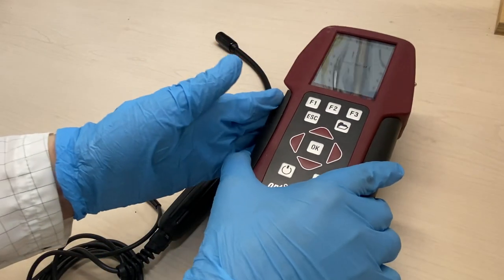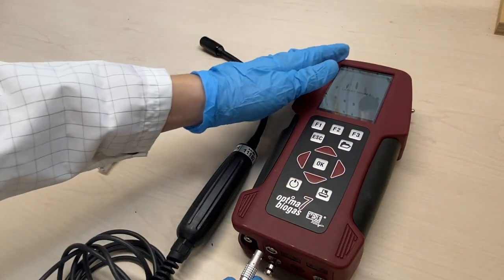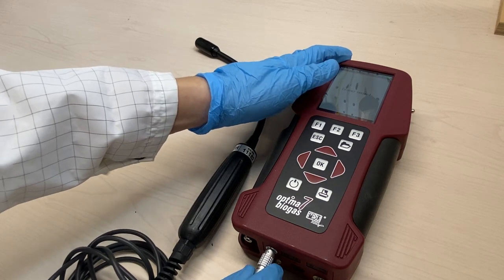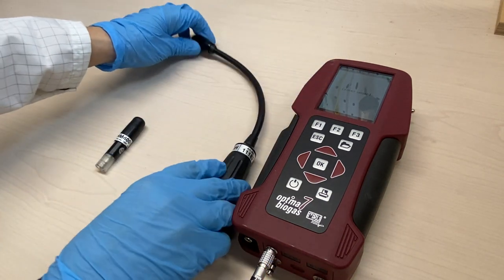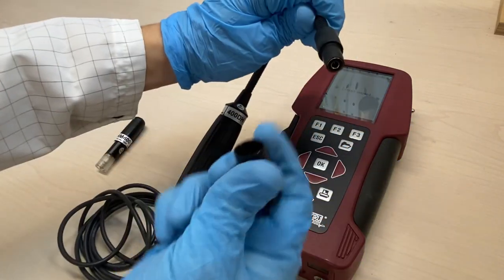Attach the sensor probe to the auxiliary port, making sure the red dot on the probe aligns with the red dot on the auxiliary port. Do not forget to remove the protective cap from the sensor.